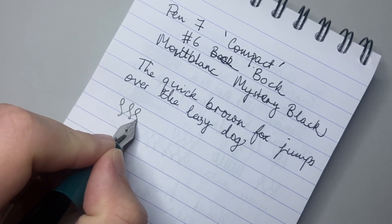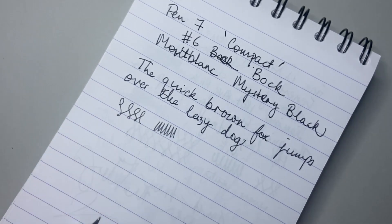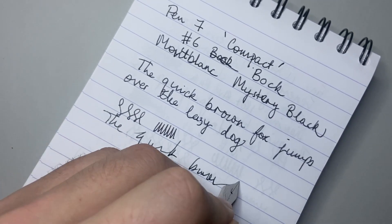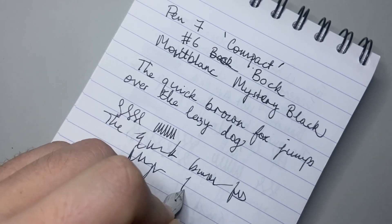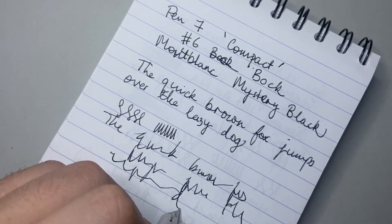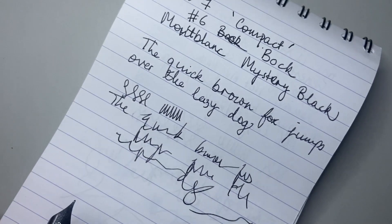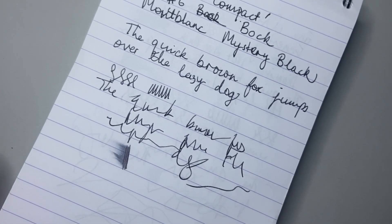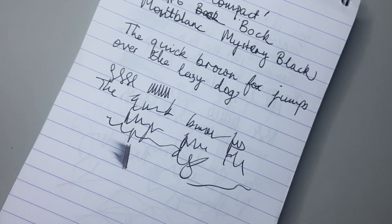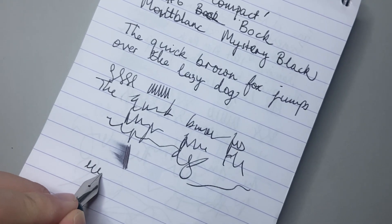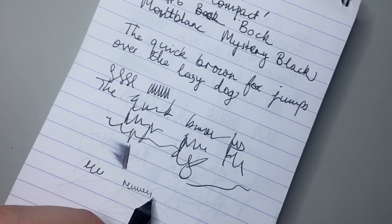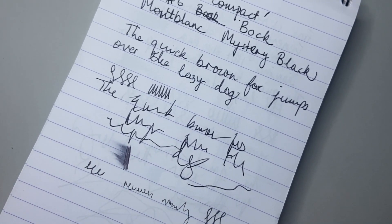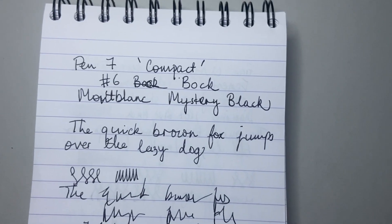It rides very smoothly as you would expect from a Bock nib. Bock makes very fine nibs. There is no problem with this pen keeping up with fast writing, not at all. Bock nibs aren't super wet, they're probably a touch drier than say a Jowo nib, but it's very smooth and comfortable. Reverse writing is possible.